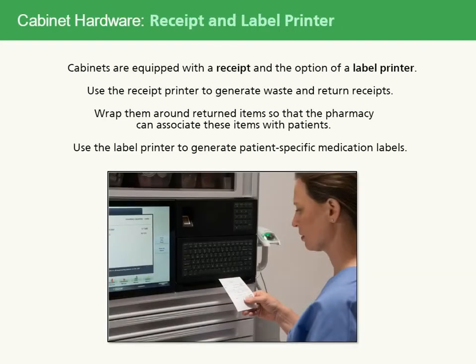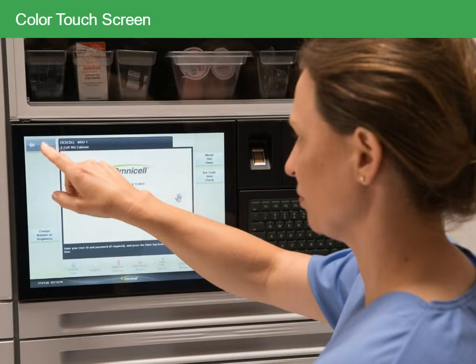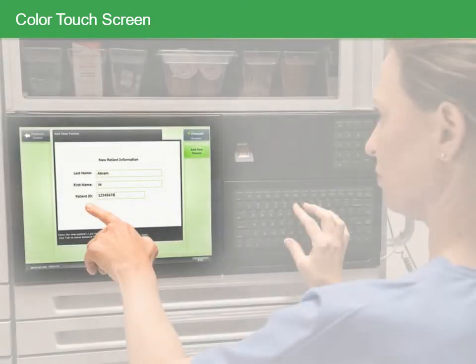Cabinets are equipped with a receipt printer and the option of a label printer. Use the receipt printer to generate waste and return receipts, and wrap them around returned items so that the pharmacy can associate these items with patients. Use the label printer to generate patient-specific medication labels. You'll interact with cabinets using the color touch screen. While there is a keyboard, there is often no need to use it because you can accomplish most tasks by interacting with the screen.